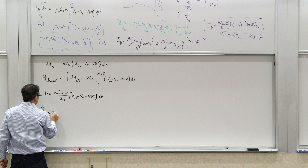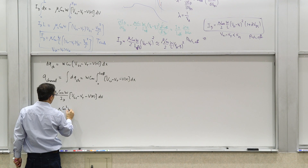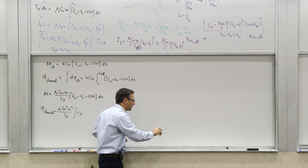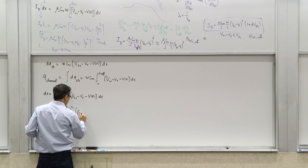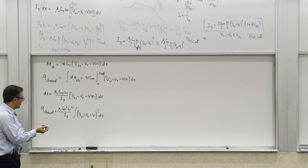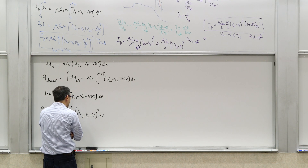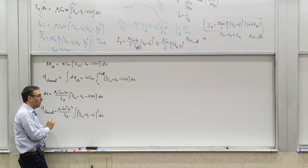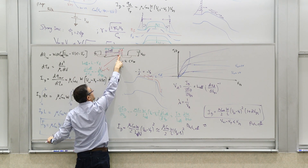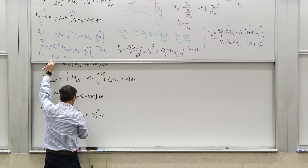After substitution, Q_channel becomes: μn·Cox²·W²/Id · ∫(Vgs − Vt − V)² dV. The limits of integration are important: the voltage at the source end is zero and at the drain end (L_effective in pinch-off) it is Vgs − Vt. So we integrate from zero to Vgs − Vt.